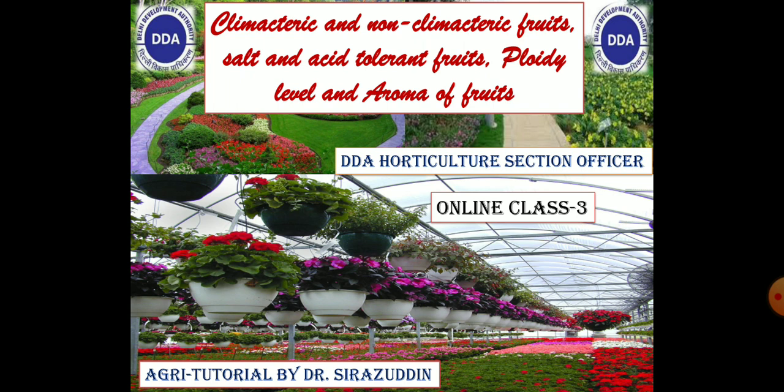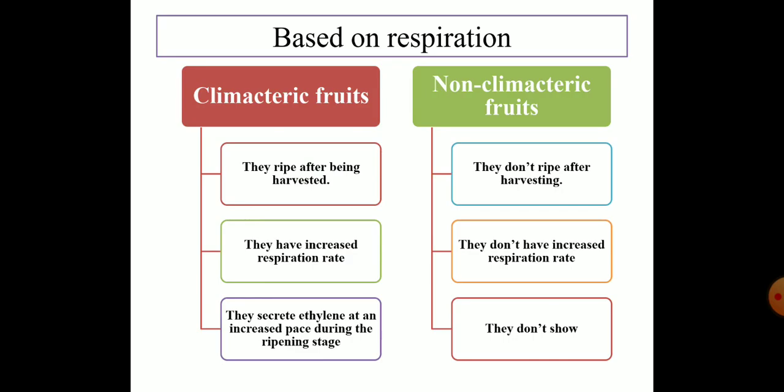Let us start. Based on respiration, your fruits have been categorized into two categories: climacteric fruits and non-climacteric fruits. The climacteric fruits ripen just after being harvested, while non-climacteric fruits do not ripen after harvesting. Climacteric fruits have an increased respiration rate, but in the case of non-climacteric fruits they do not have an increased respiration rate.